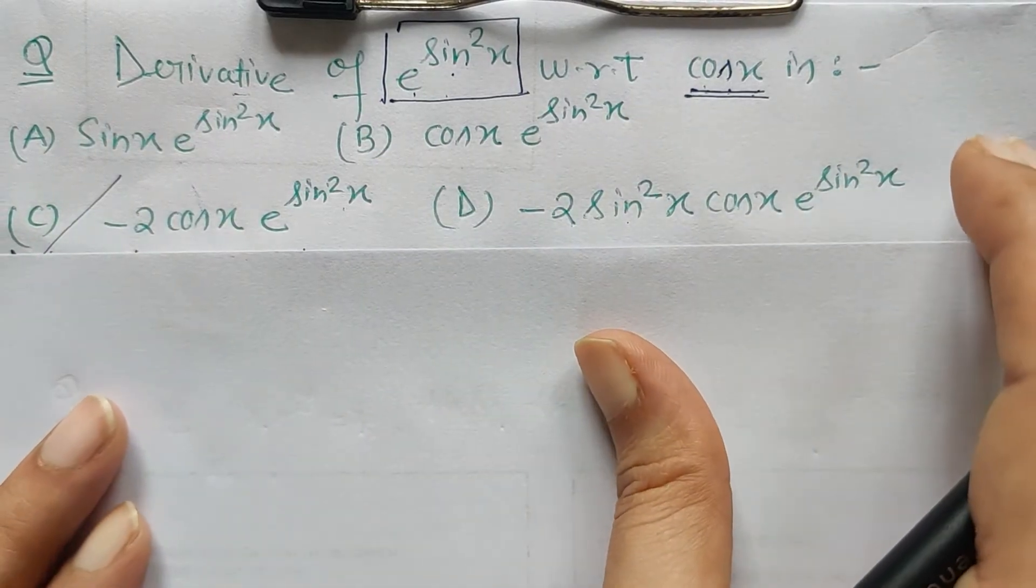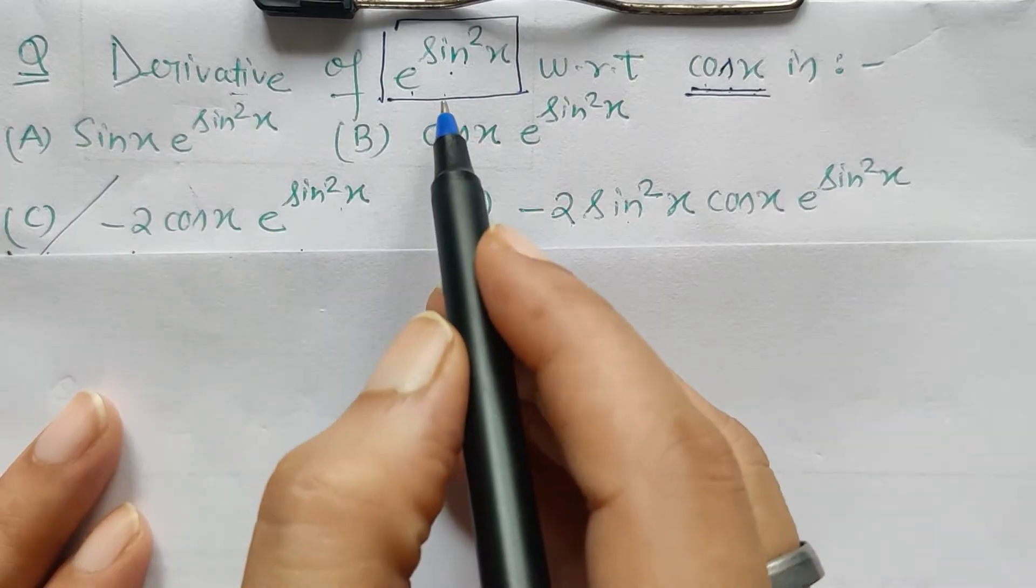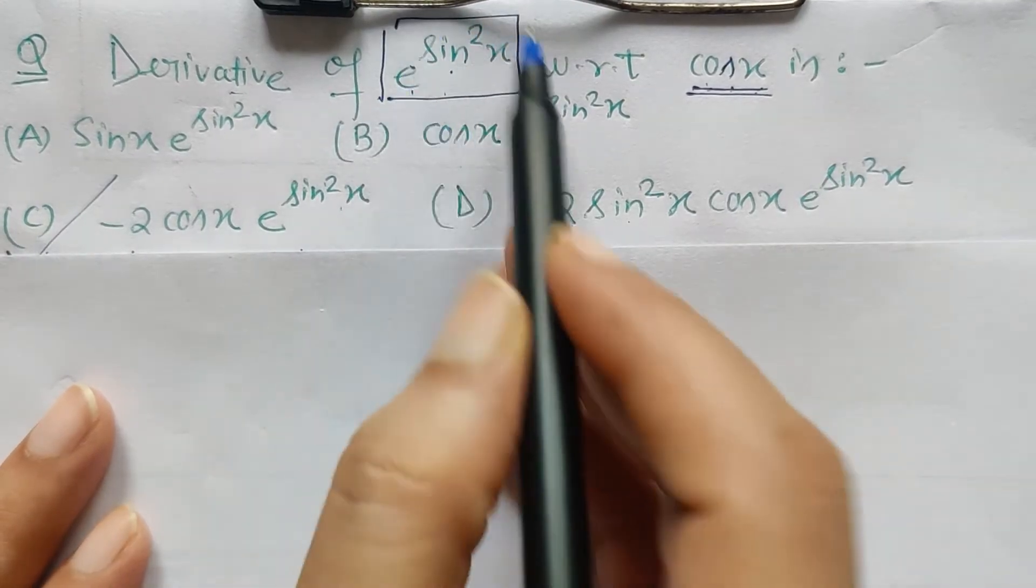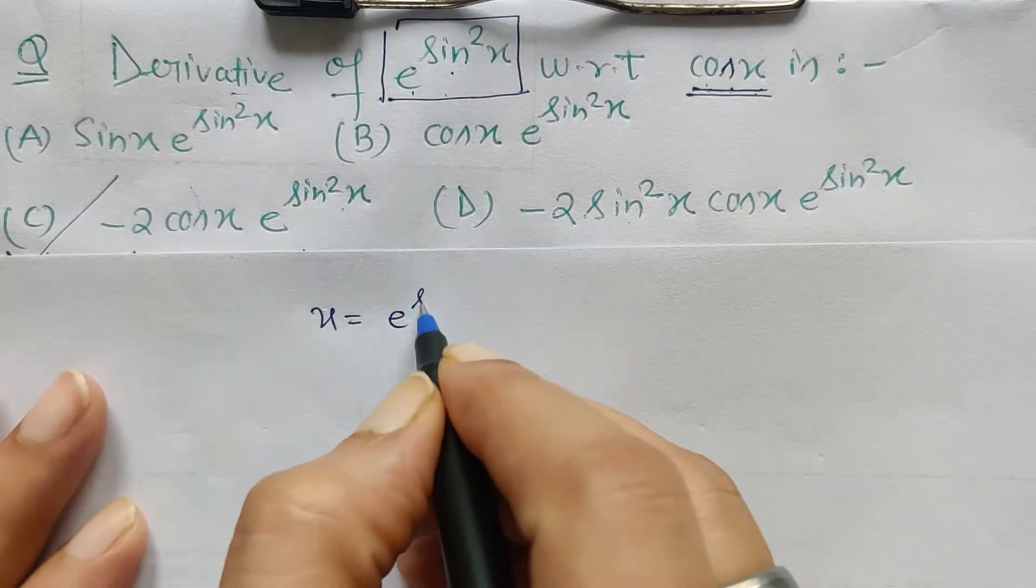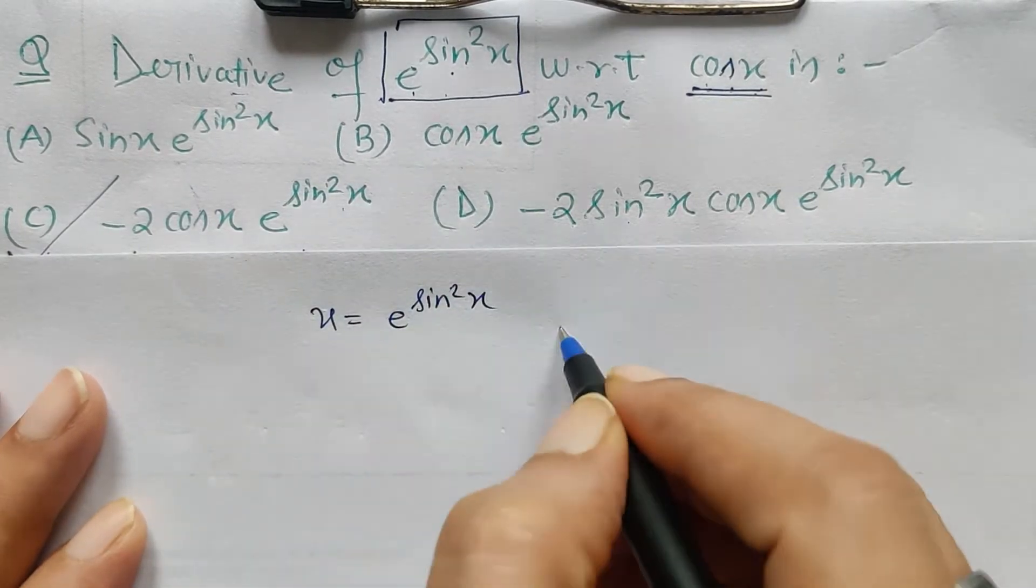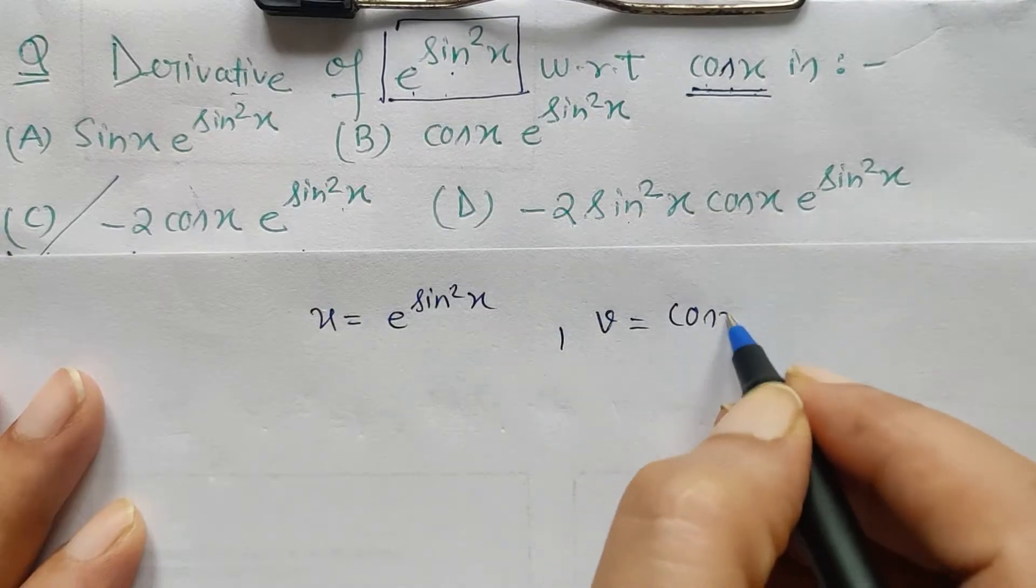Here what we have to do is assume this as one variable. Let us suppose u is e to the power sine square x, and v is cos x.